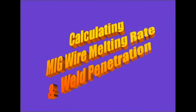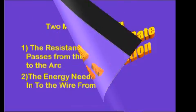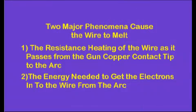Then what are the variables that cause MIG wire to melt? Two factors cause a MIG wire to melt. The current passing through the small wire diameter causes it to get very hot as it leaves the gun tip on its way to the arc. This is called resistance heating.